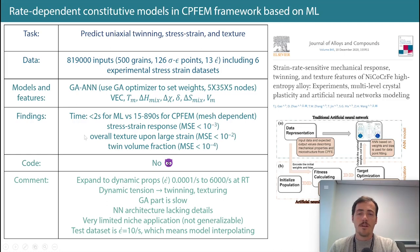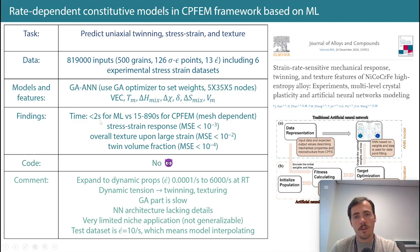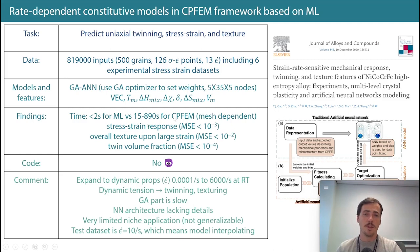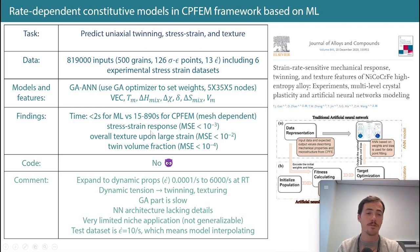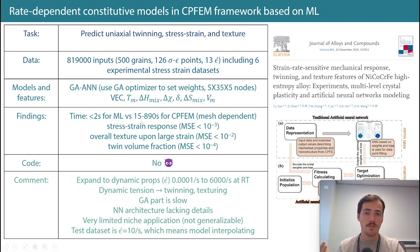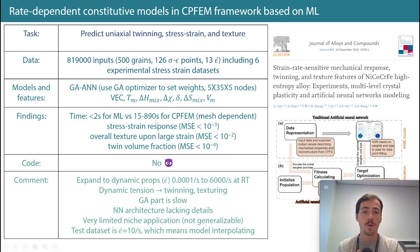The approach they used was a genetic algorithm artificial neural network — using a genetic algorithm instead of gradient descent and back-propagation to tune weights. Slower but can be more accurate. The features used were the same typical ones. In terms of speed, they show that the ML model takes less than 2 seconds versus 15 to 890 seconds for crystal plasticity finite element modeling, which depends on mesh fineness. ML is doing it faster.